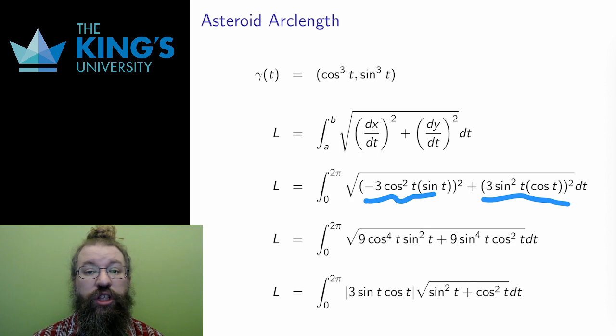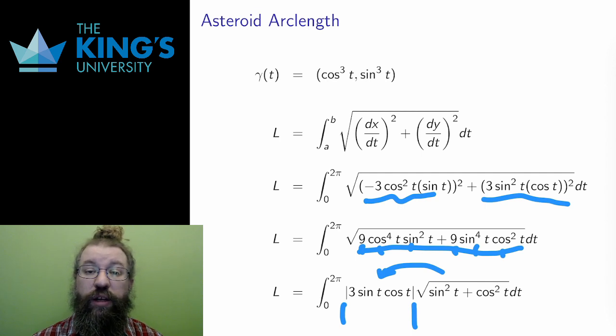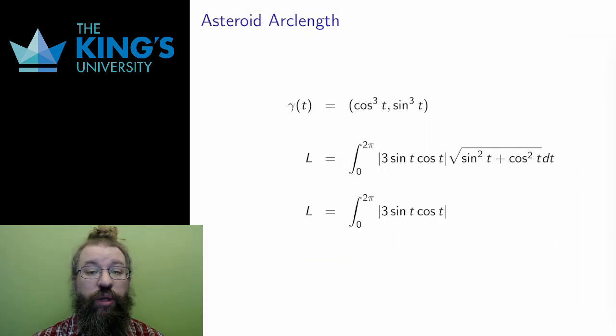There is a common term in this expression, 9cos²t sin²t, so I can factor out that term, and I can even take it out of the square root as 3cos t sin t. I use absolute value when I take the square out of the square root, since the original may have been negative, but when squared and square rooted, the result is always positive. Then the term under the square root is, again, sin² plus cos², which is 1, and the square root of 1 is 1, so I'm just left with this integral.